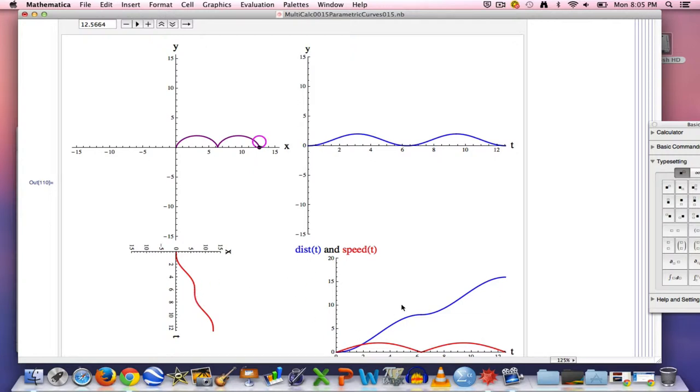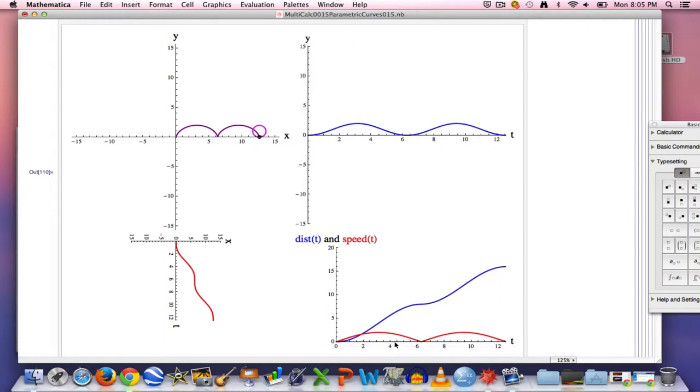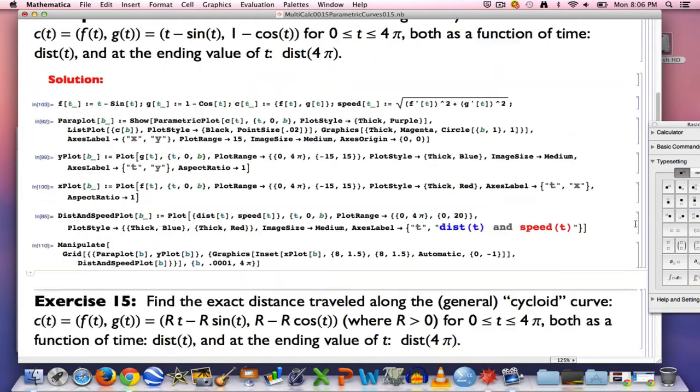In the lower right we have the speed function, that's red. It gives you the instantaneous speed at any moment in time. And here the blue curve, that's the distance traveled function. This is the one whose formula we are after, and we are also after its value at 4π, which looks like it's around 16 or so. But we want an exact answer. So we need to do some math now.